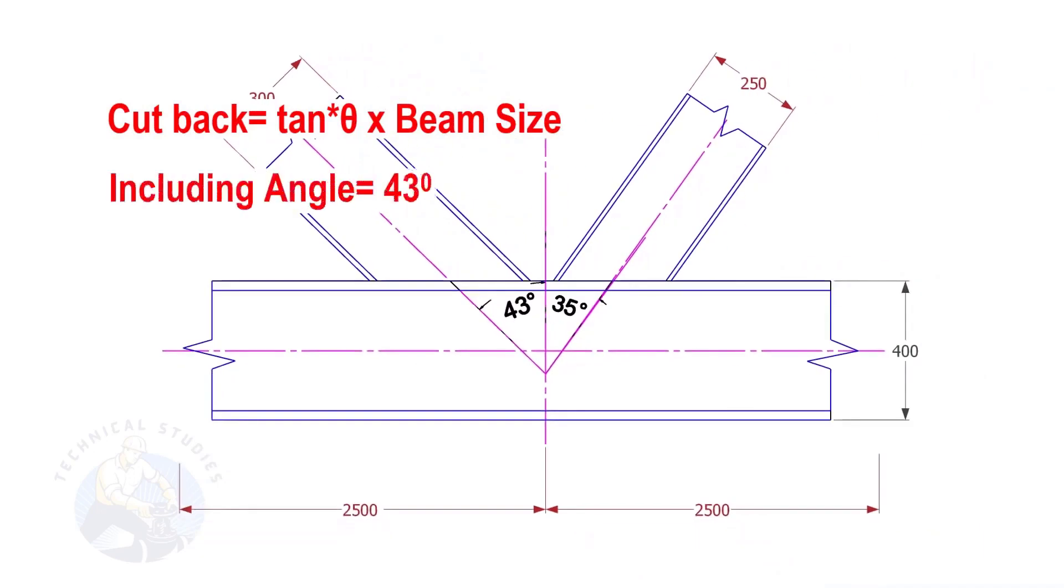If the including angle is 43 degrees and the size of the beam is 300, the cutback is tan 43 into 300.